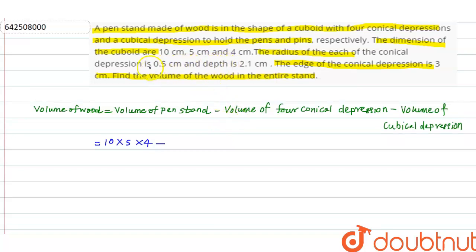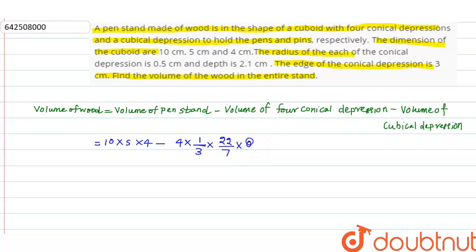The radius of each conical depression is 0.5 cm and depth is 2.1 cm. So the volume of 4 conical depressions is 4 × (1/3) × π × r² × h, where π = 22/7, r = 0.5, and h = 2.1.